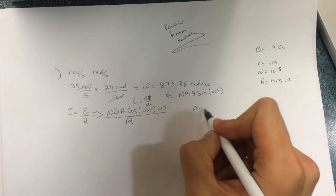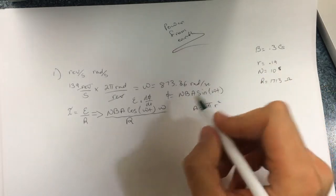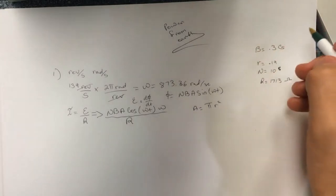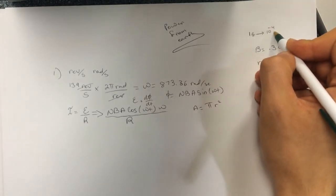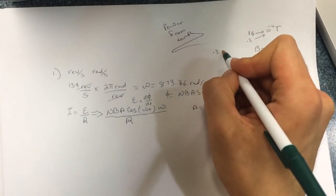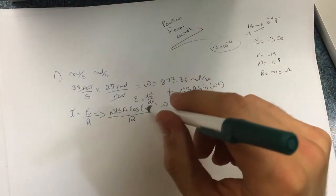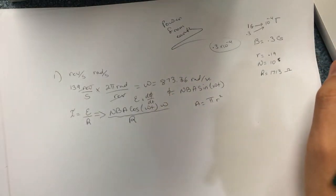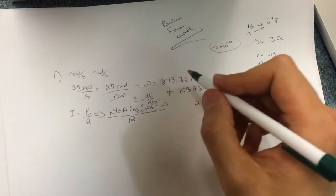The area here is the circle area, π r², where r = 0.19 m. They give B in Gauss, and 1 Gauss equals 10⁻⁴ Tesla, so 0.3 G is 0.3 × 10⁻⁴ T. The number of turns N is 10⁻⁵. We take cosine(ωt) equal to 1 since we want the peak current, then substitute everything to find the current.